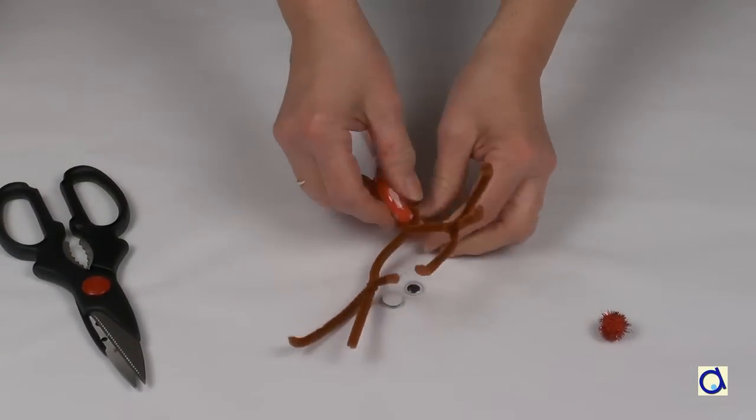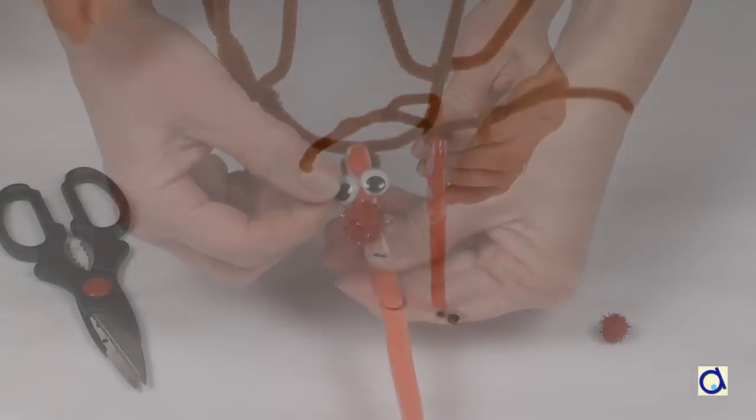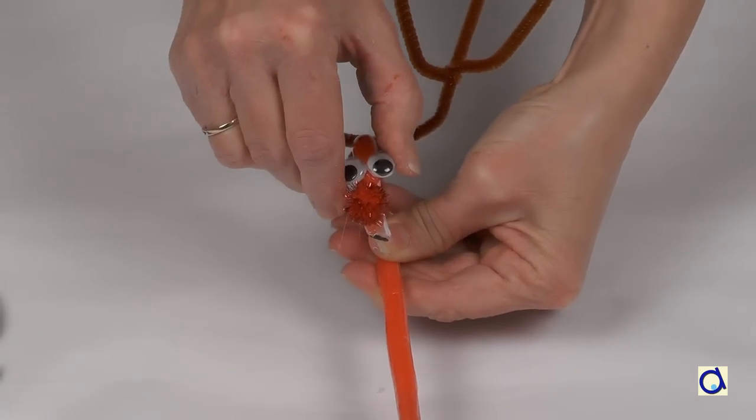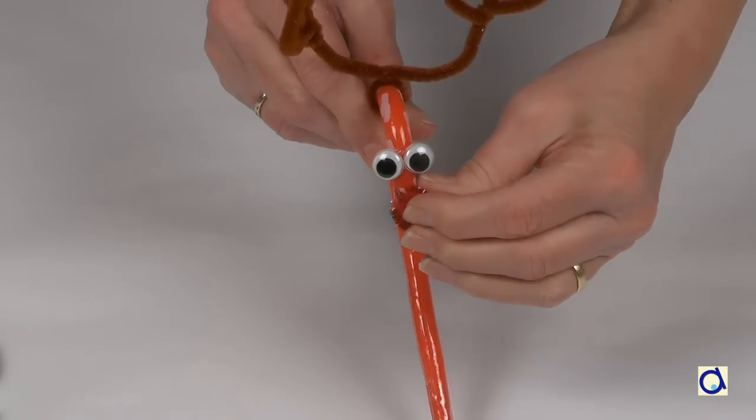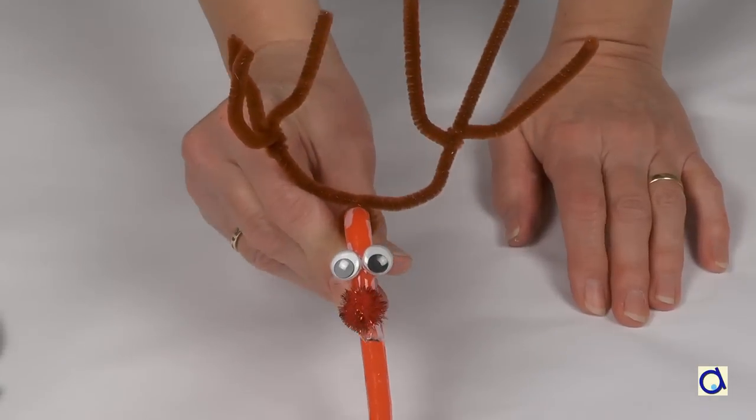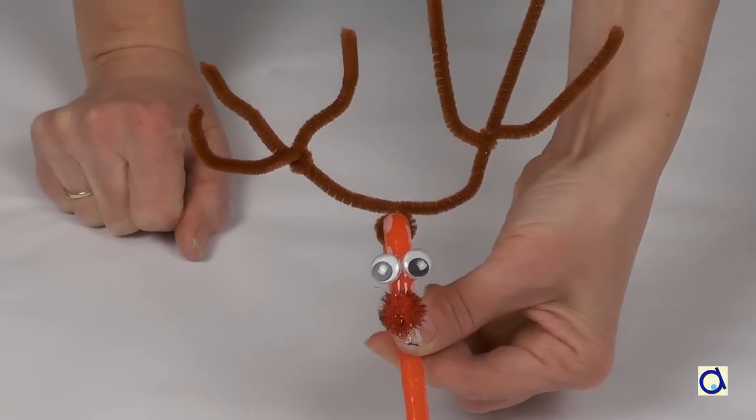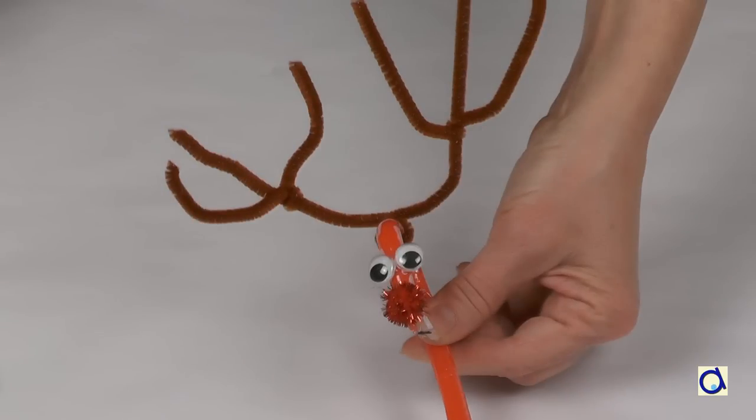If necessary, adjust the length of the antlers by cutting the excess with scissors. Continue as for the other example by adding a nose and googly eyes. This reindeer has more complex antlers with three branches on either side of the head.